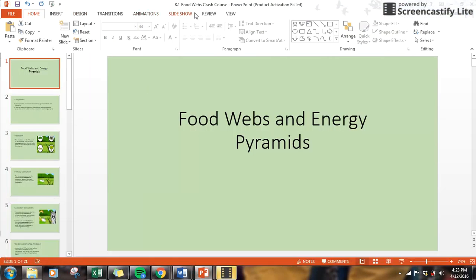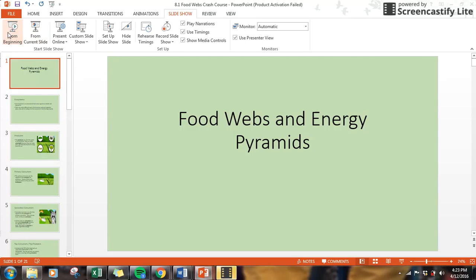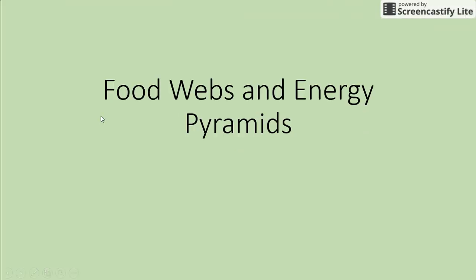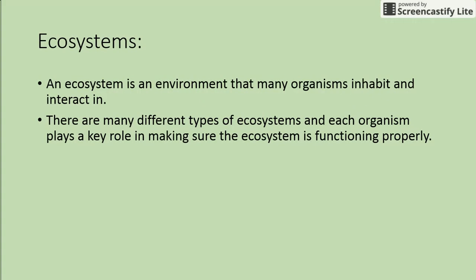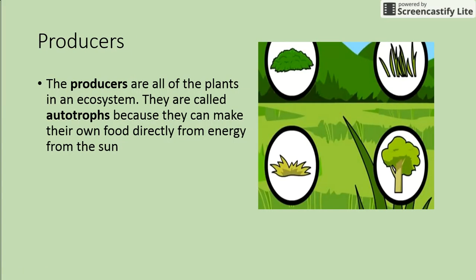This is a crash course for food webs and energy pyramids. Let's take down some vocab notes. An ecosystem is an environment that many organisms inhabit and interact in. There are many different types of ecosystems and each organism plays a key role in making sure it's functioning properly — basically the environment that organisms live in.